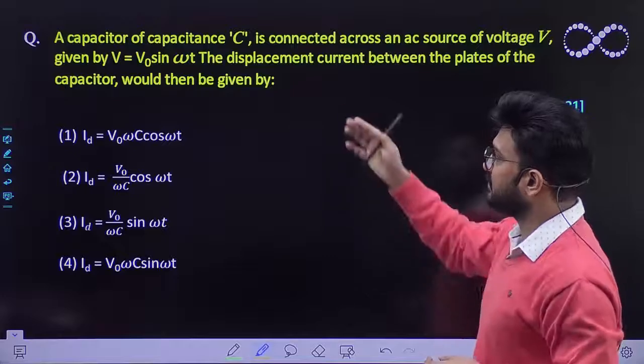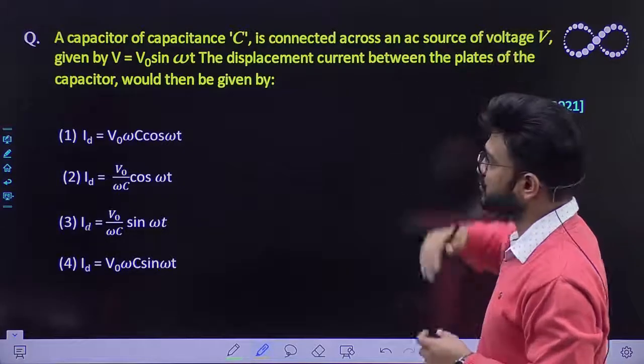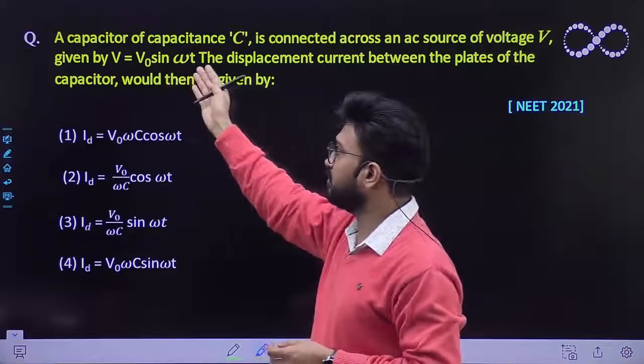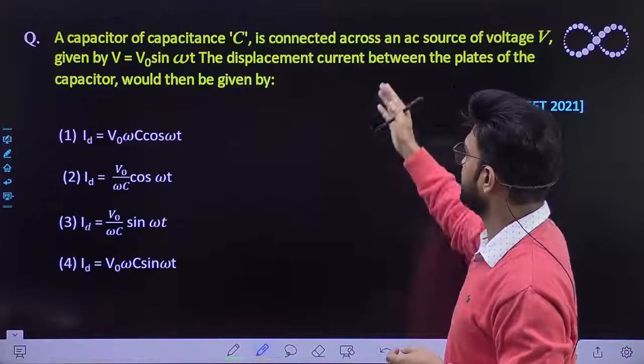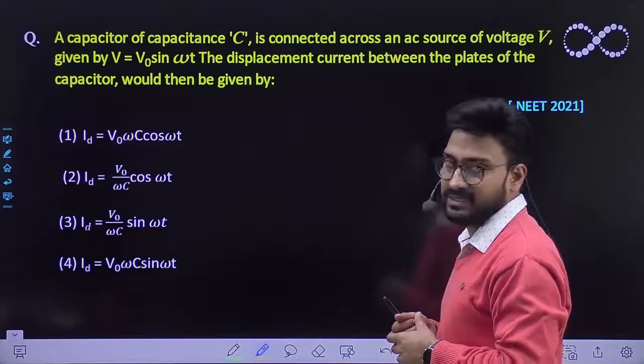Question says a capacitor of capacitance C is connected across an AC source of voltage V, and V is fluctuating just like V0 sin ωt. The displacement current between the plates of the capacitor would then be given by a relationship.